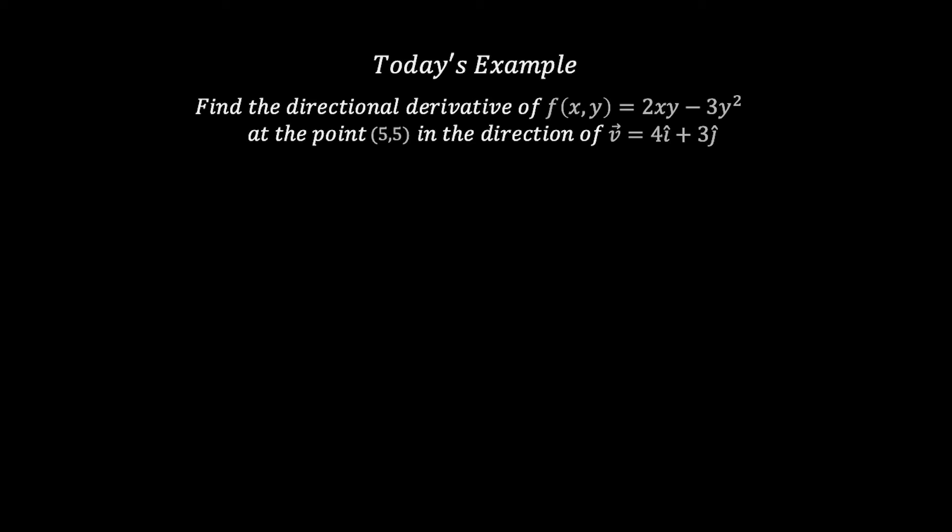What's up everybody, it's YYC Maths here. In today's example we're asked to find the directional derivative of the function f(x,y) = 2xy - 3y² at the point (5,5) in the direction of the vector 4i + 3j.